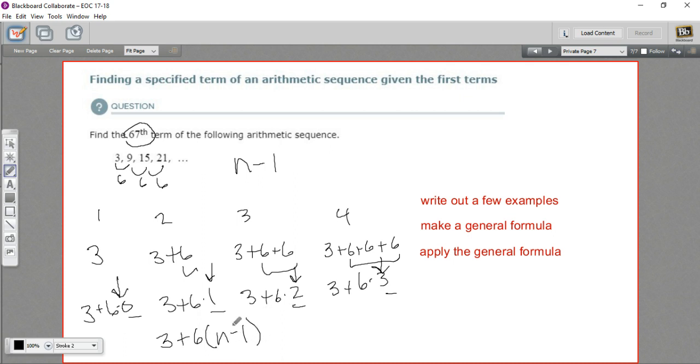Now let's just think that through and test a few. If it's the first term, I'd put 1 in for n because n represents which term it is. First term, that's 1. 1 minus 1 is 0. I get 3 plus 6 times 0. That gives me 3. If it's the fourth term, I'd put a 4 in here. 4 minus 1 is 3. I get 3 plus 6 times 3. That's exactly what I've got for this fourth term. So this is our general rule.